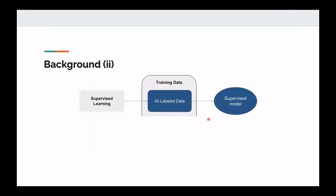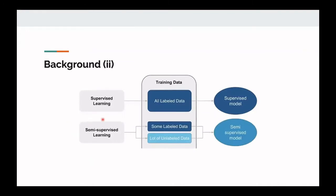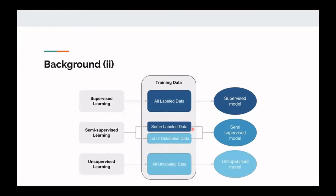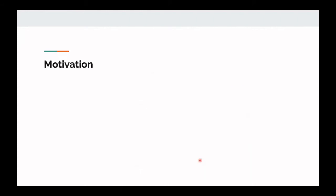Just to briefly cover supervised versus unsupervised learning: supervised learning has all labeled data and produces a supervised model. For semi-supervised learning, we have some labeled data and lots of unlabeled data. We'll later talk about different percentages of labels, like 1% or 10% of the data being labeled and what kind of impact that makes on training. And then there's fully unsupervised learning, which is all unlabeled — the ideal situation.